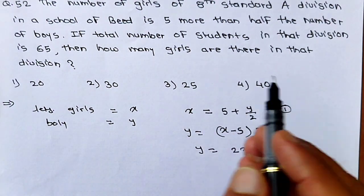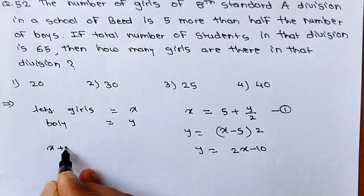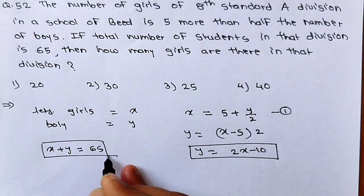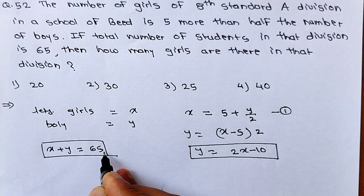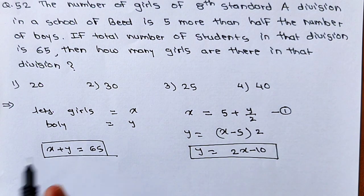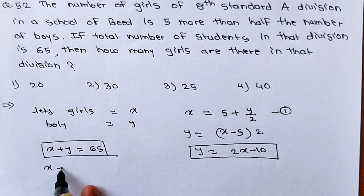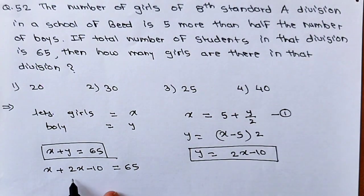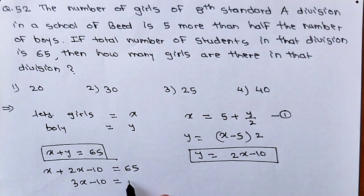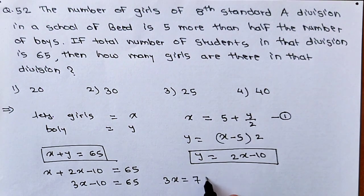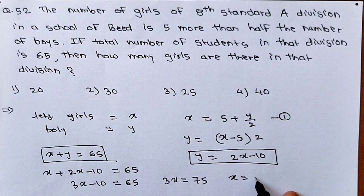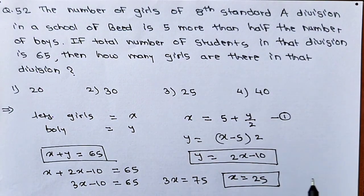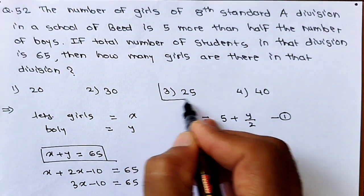We have two equations: Y = 2X − 10 and X + Y = 65. Substituting the value of Y: X + (2X − 10) = 65, which gives 3X − 10 = 65, so 3X = 75 and X = 25. You just need to be able to derive these equations. So 25 is our answer — option 3 is correct.